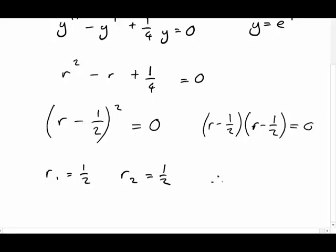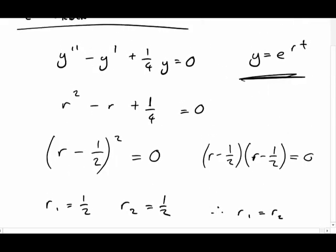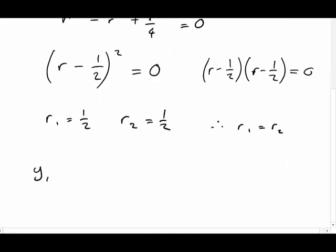So what does that mean? Well, it means that r1 is equal to half, but it also means that r2 is equal to half. So we've got an equal roots case. We've got r1 equals a half, and r2 equals a half. Therefore, we can say that we've got an equal roots case, that r1 equals r2.